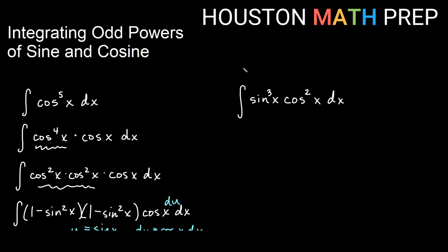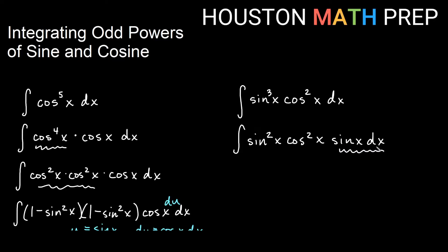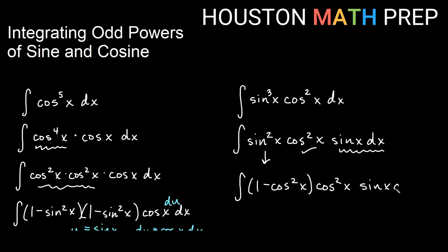Now the integral of sine cubed x cosine squared x. The cosine is an even power, so I must save one copy from the odd power of sine. We write this as sine squared x times cosine squared x times sine x dx. Since sine will be part of du, u needs to be in terms of cosine. So I keep the cosines and change the sine squared x using the Pythagorean identity to (1 minus cosine squared x), keeping the cosine squared x and sine x dx as part of du.